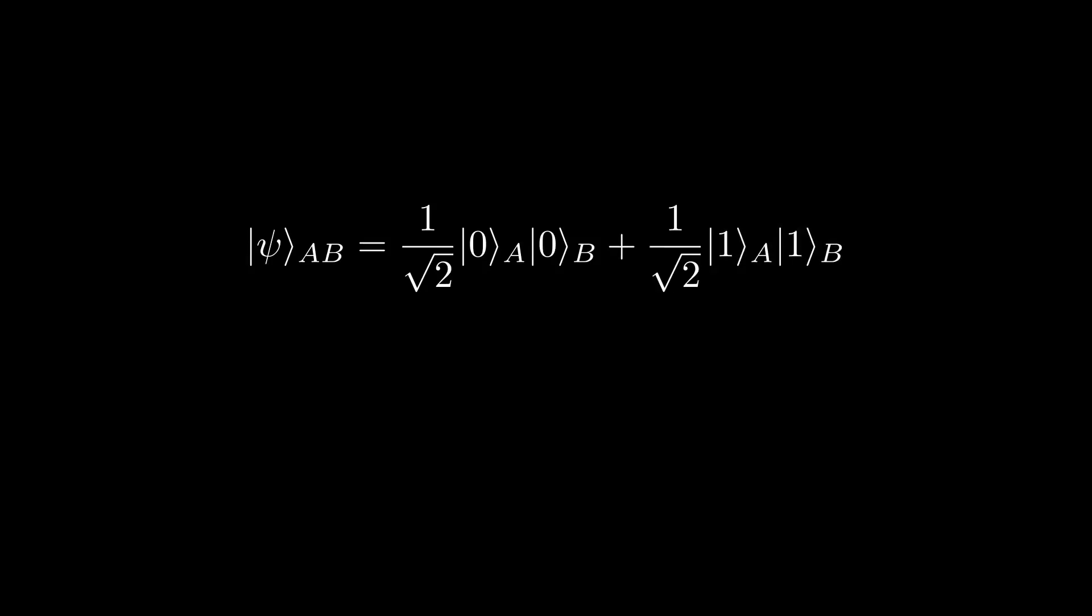Previously, I showed how for Bell states, we can obtain the state of one of the qubits by performing a measurement on the other qubit and considering the probability distribution over all possible outputs for the system of interest. We can formalize this notion for subsystems of arbitrary size by defining the partial trace.